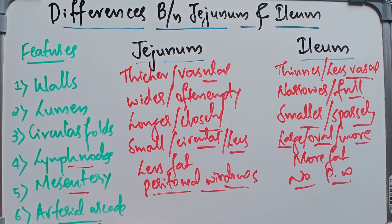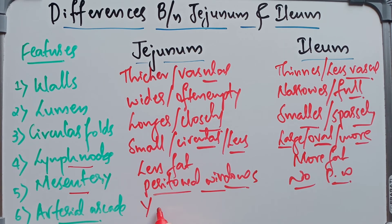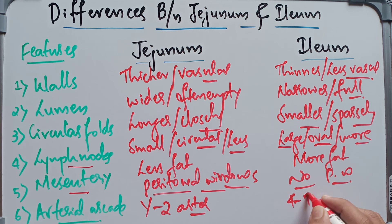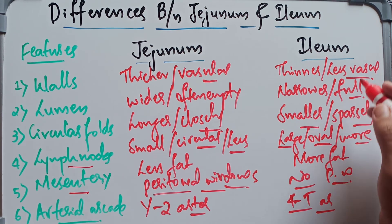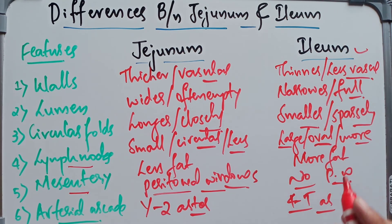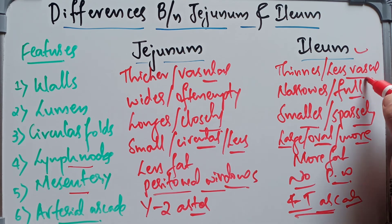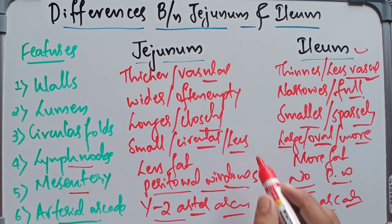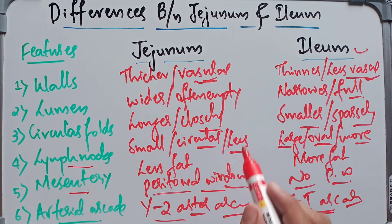Coming to the arterial arcades: in the jejunum we have one or two arterial arcades, whereas in the ileum we have up to four to five arterial arcades. Four to five arcades make it more vascular, while one to two arcades make the jejunum less vascular in nature.